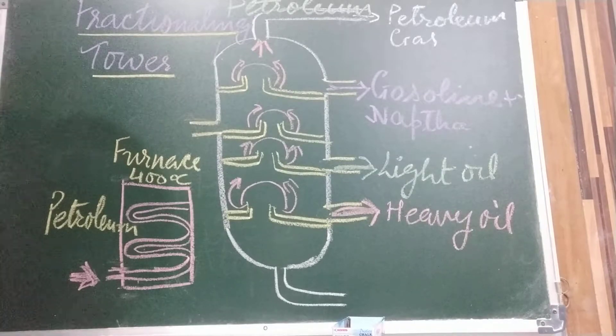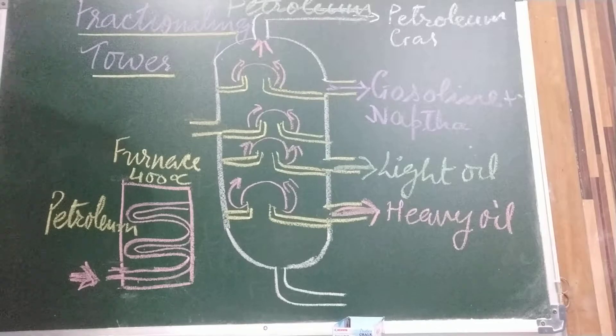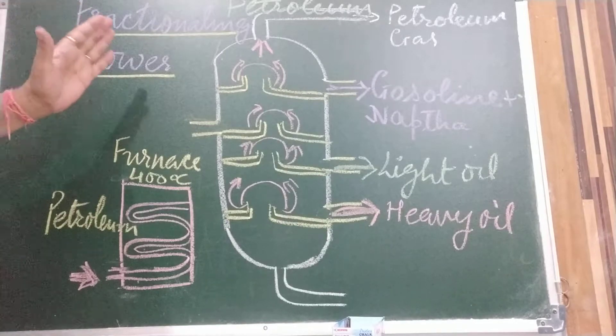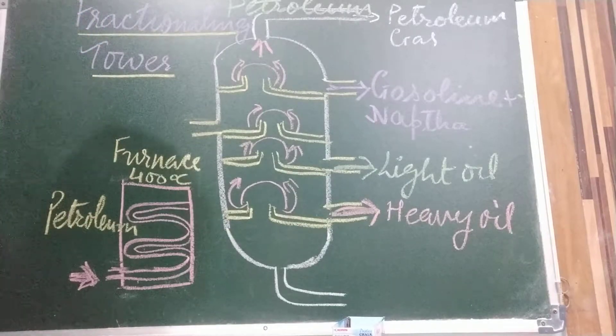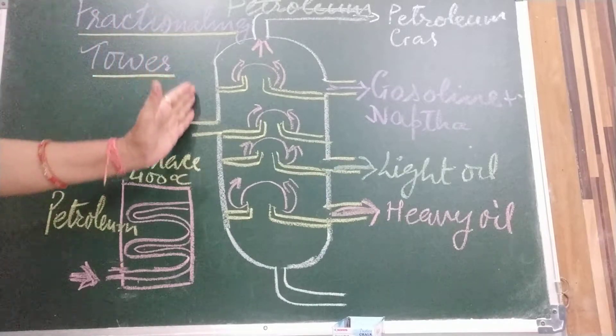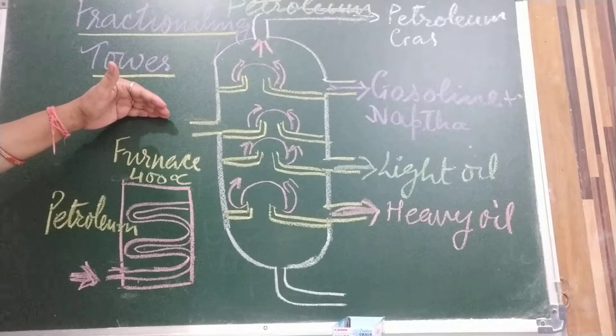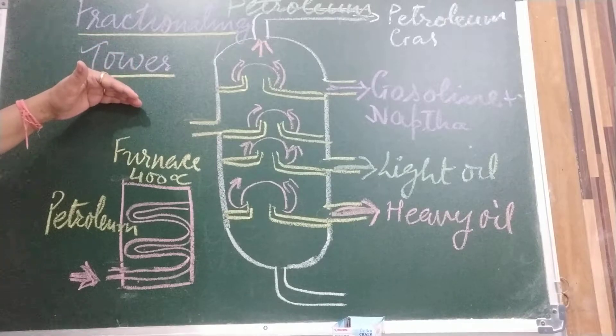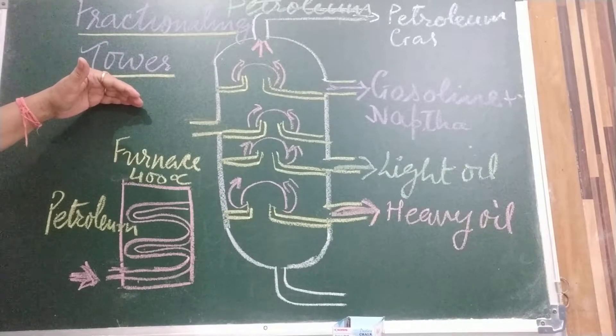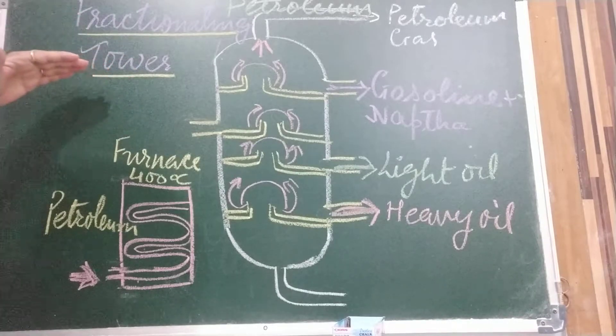Now, after getting this black liquid or crude oil, what we do, how do we get different components from the crude oil? That is called refining of petroleum. Here, I have drawn fractionating tar. Refining takes place in this fractionating tar. So how, what principle we keep in our mind during refining and what is fractional distillation, I am going to tell you.